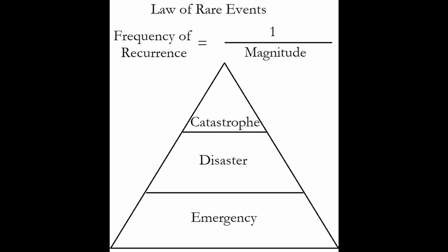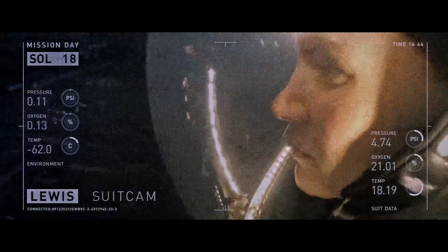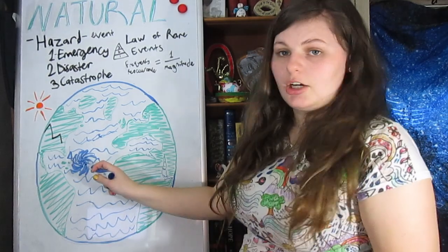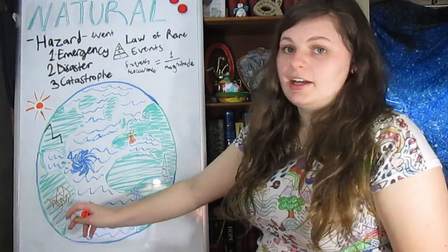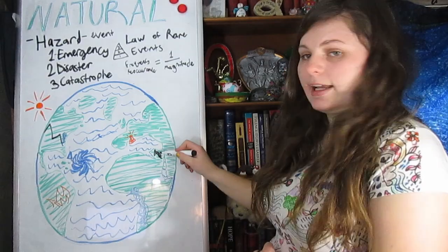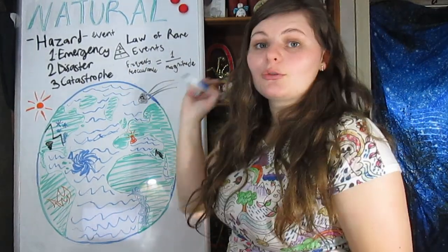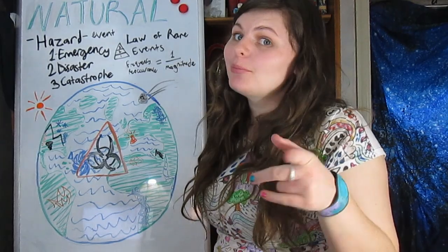When writing a story, you need to know if the event makes sense — for example, you wouldn't get a crazy dust storm on Mars since the atmospheric pressure is too low (The Martian — though the rest of the science in the book and film is great). The types of natural hazards include earthquakes, hurricanes, tsunamis, volcanoes, fires, floods, landslides, tornadoes, meteors, heat waves, cold fronts, blizzards, sandstorms, droughts, and infectious diseases — and probably more.